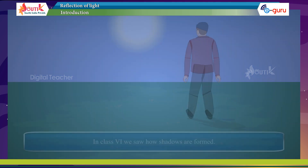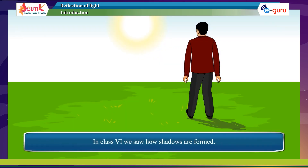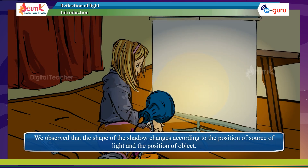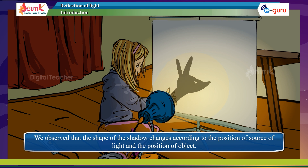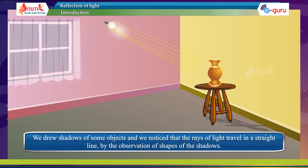In Class 6, we saw how shadows are formed. We observed that the shape of the shadow changes according to the position of the source of light and the position of the object. We drew shadows of some objects and noticed that the rays of light travel in a straight line, by observing the shape of the shadows.